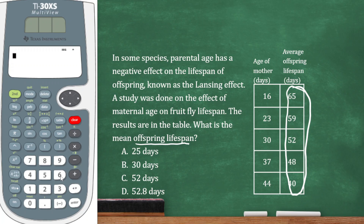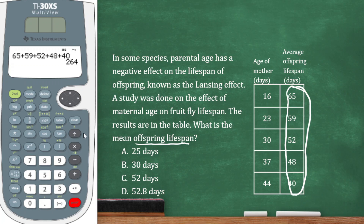Let's add them up first. At this point, it's important to hit Enter first to find your sum. If you hit divide before you hit Enter, it would only do 40 divided by 5, not that whole sum divided by 5. Now I'm going to divide by however many numbers there are — there are 5. So I'll divide my answer by 5. And there we go: 52.8 days is my answer. D.